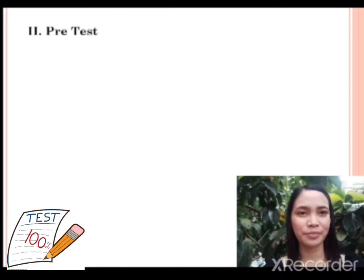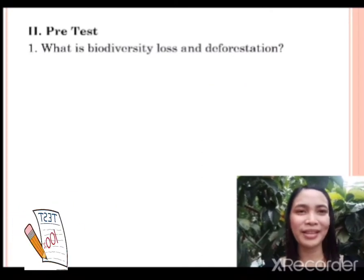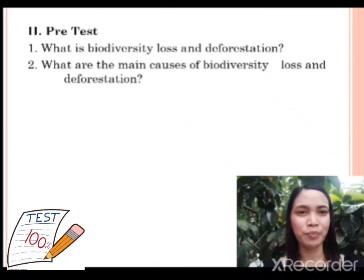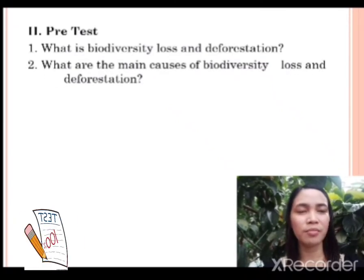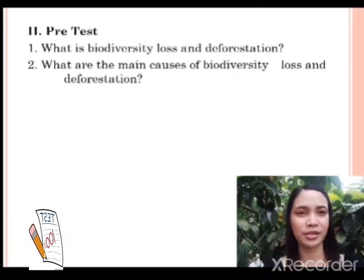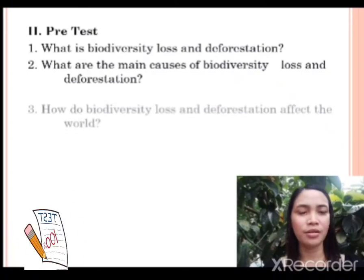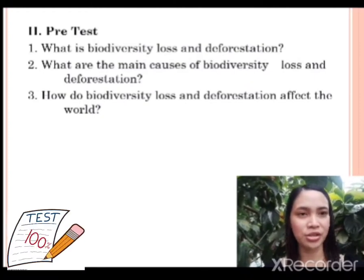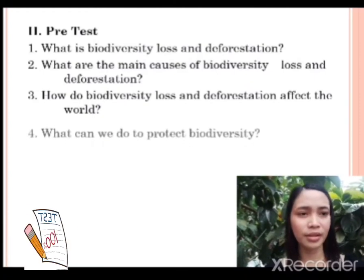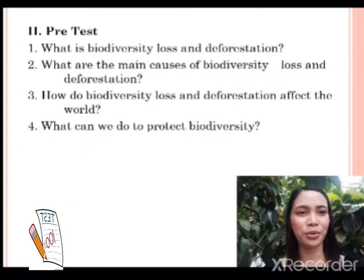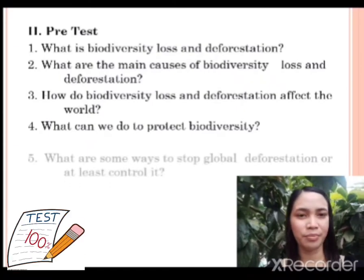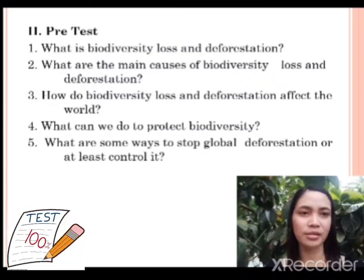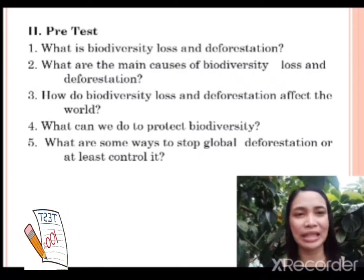Pre-test. Number 1: What is biodiversity loss and deforestation? Number 2: What are the main causes of biodiversity loss and deforestation? Number 3: How do biodiversity loss and deforestation affect the world? Number 4: What can we do to protect biodiversity? And number 5: What are some ways to stop global deforestation or at least control it?